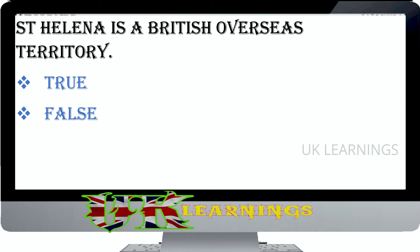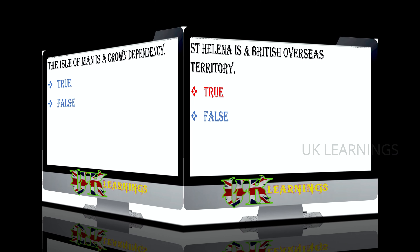St Helena is a British Overseas Territory. True or false? The correct answer is true. British Overseas Territories in other parts of the world include St Helena and the Falkland Islands. They are also linked to the UK but are not part of it.